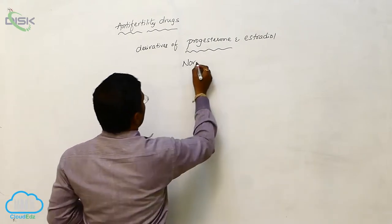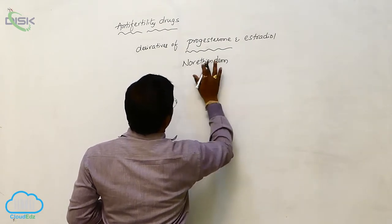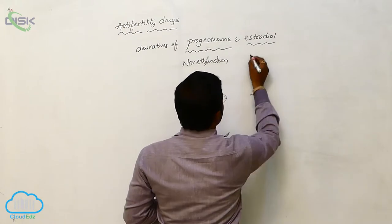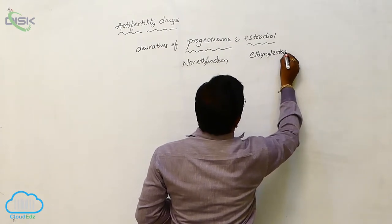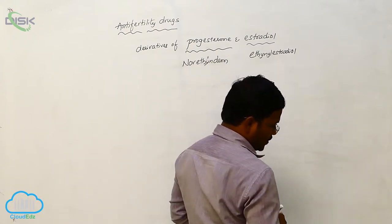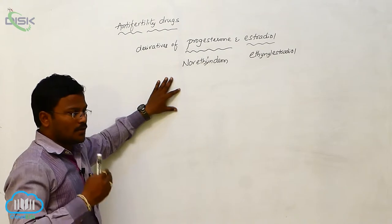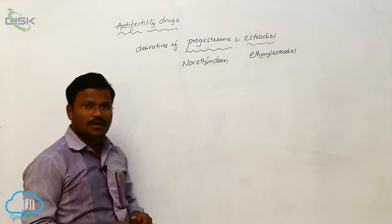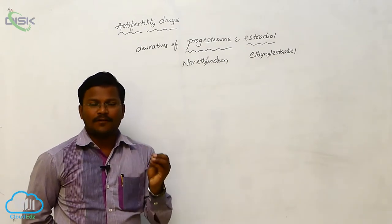The progesterone derivative used as an anti-fertility drug is norethindrone. The estradiol derivative used is ethenyl estradiol. These two are used as anti-fertility drugs to decrease or control excess population.